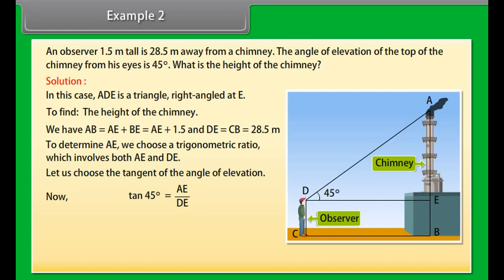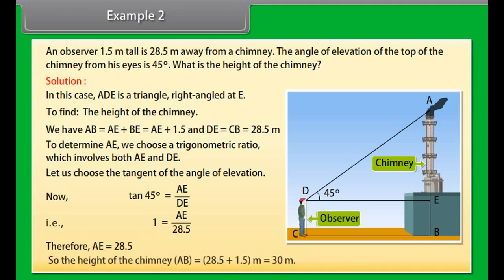tan 45° equals AE upon DE, that is 1 = AE / 28.5, therefore AE = 28.5. So the height of the chimney AB = 28.5 + 1.5 = 30 meters.